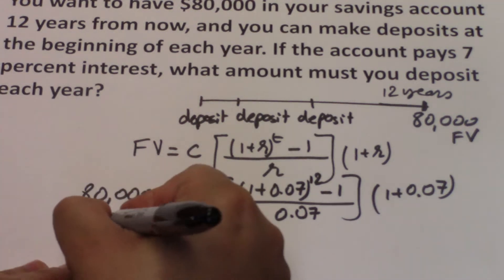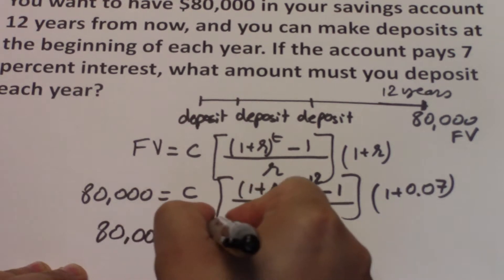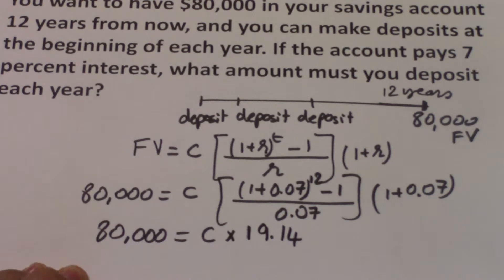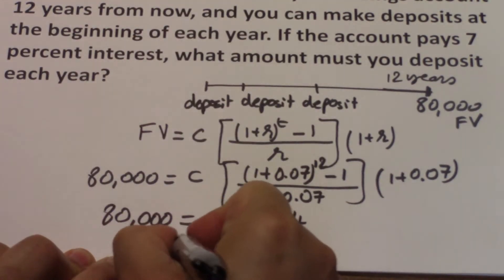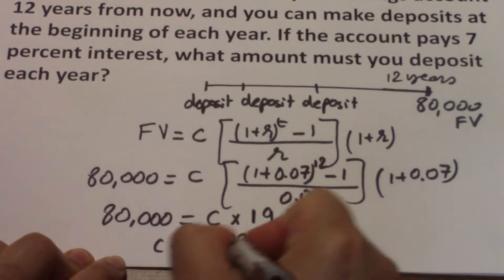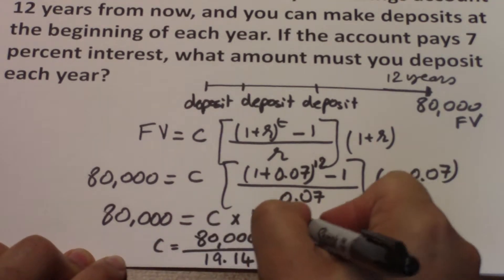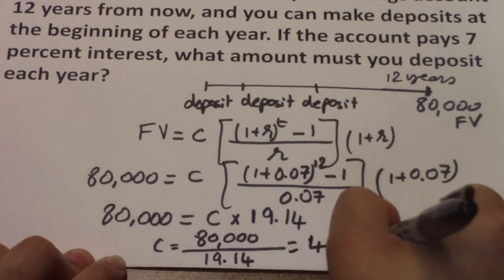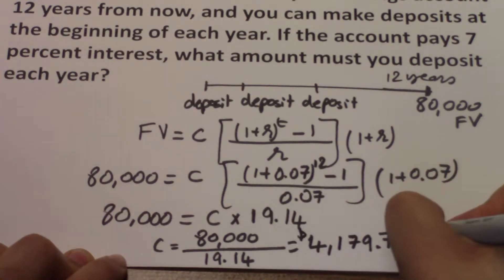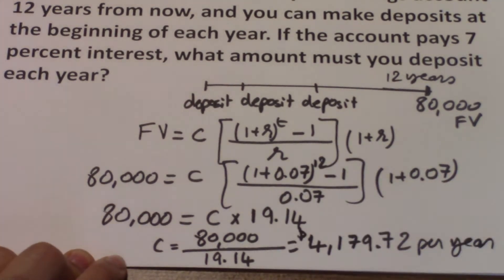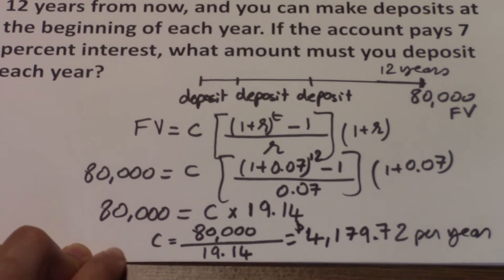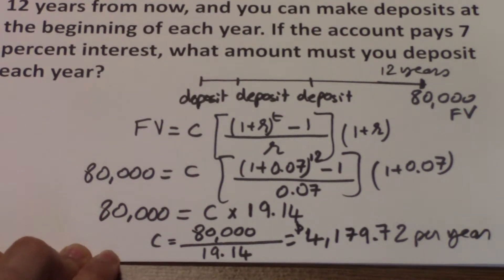So this means that 80,000 equals C times 19.14. Now we can just rearrange. So C equals 80,000 divided by 19.14, which gives us a payment of $4,179.72 per year. So in order to have $80,000 at the end of 12 years, if the investment pays you 7% interest, you need to deposit $4,179.72 per year.